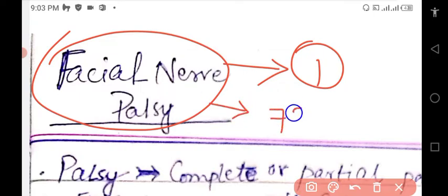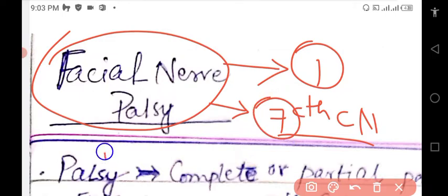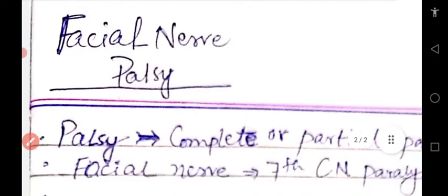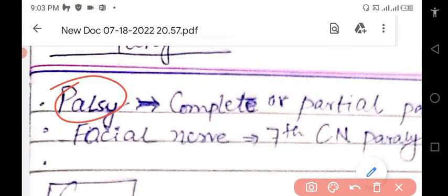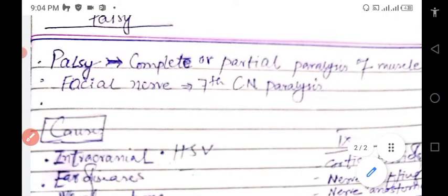Facial nerve palsy is also known as seventh cranial nerve palsy, in which the seventh nerve, or facial nerve, becomes paralyzed. Palsy means complete or partial paralysis of the nerve.